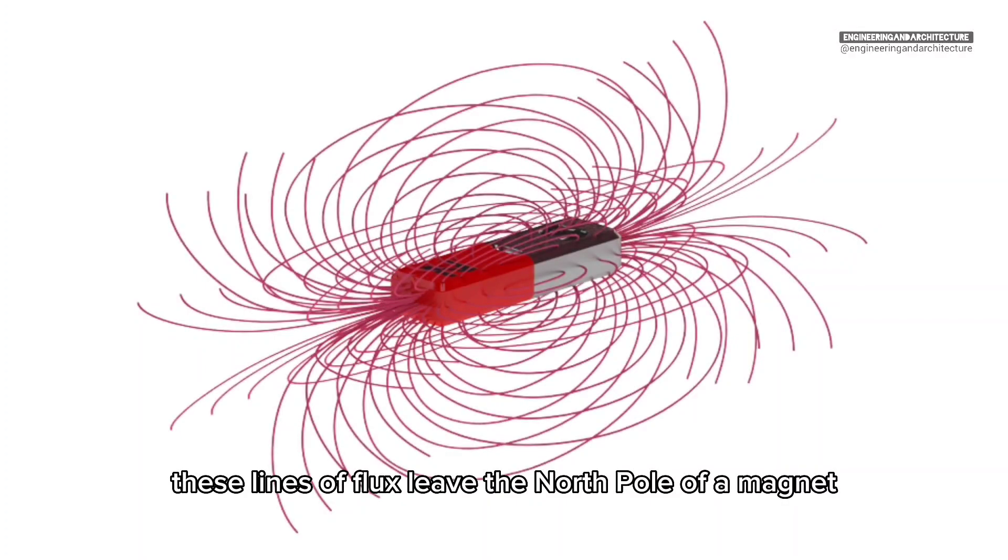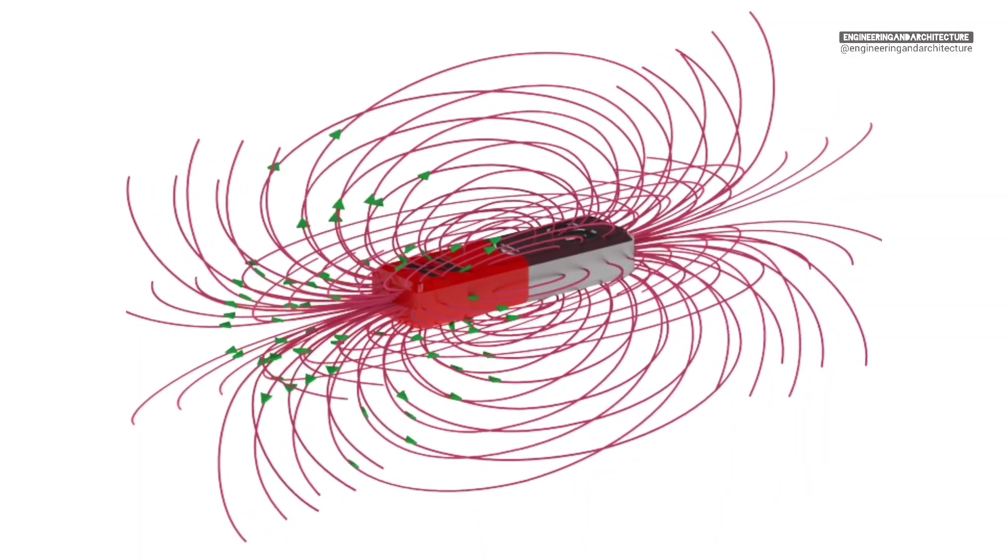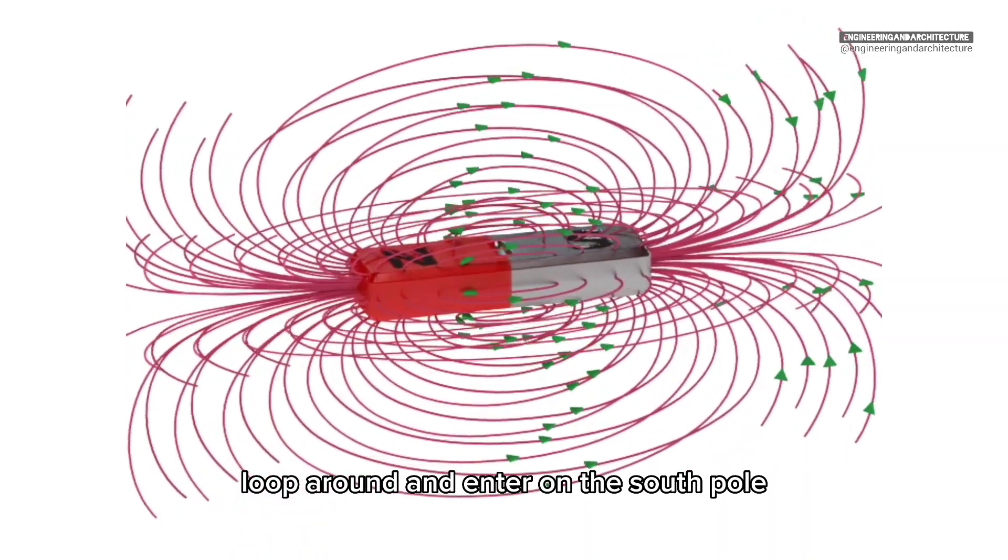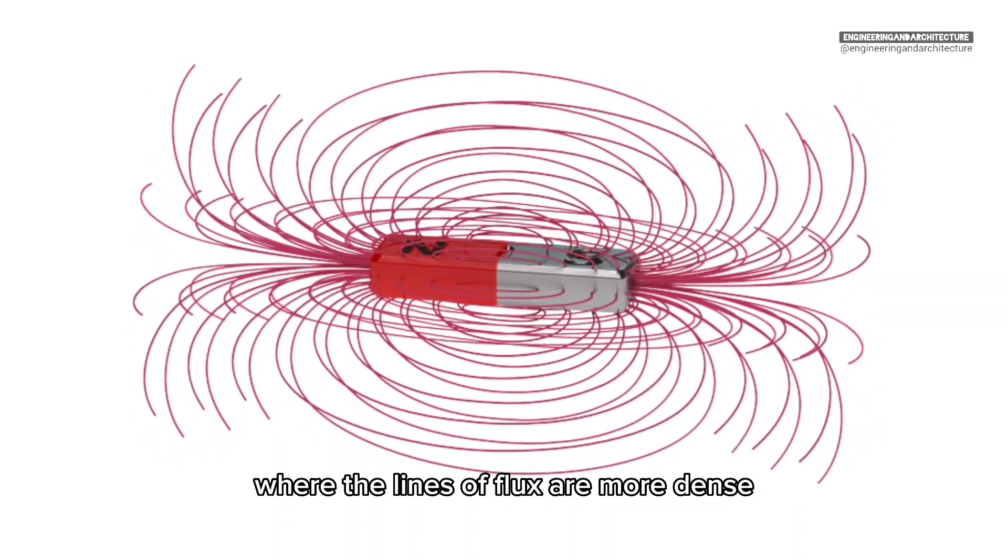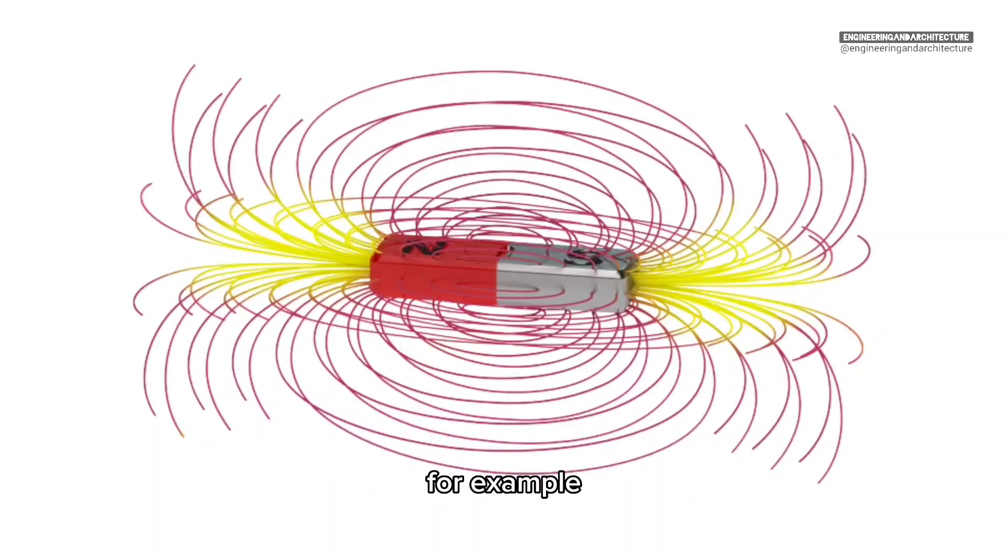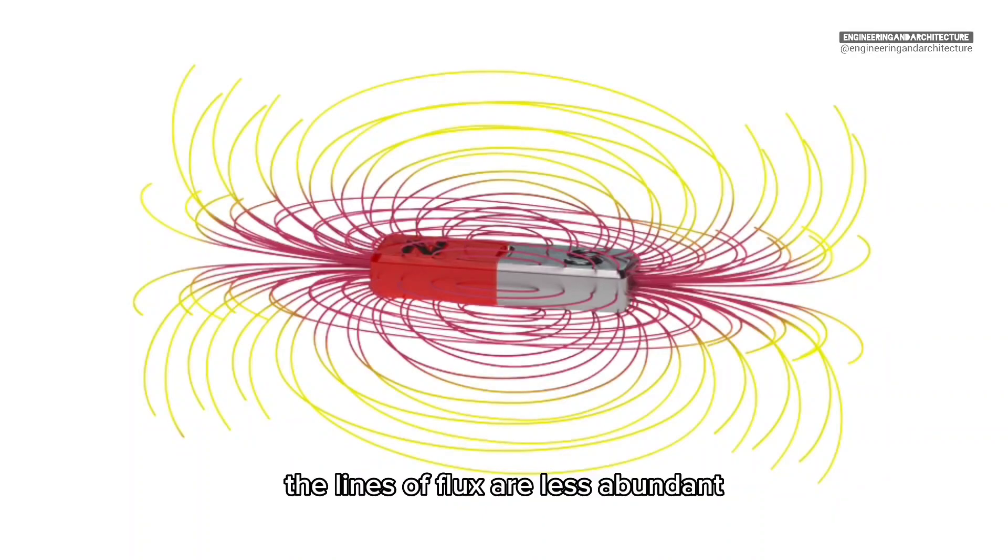These lines of flux leave the north pole of a magnet, loop around, and enter on the south pole. Where the lines of flux are more dense, for example near the poles of the magnet, the magnetic field is strongest. As you move away from the poles, the lines of flux are less abundant, so the magnetic forces are diminished.